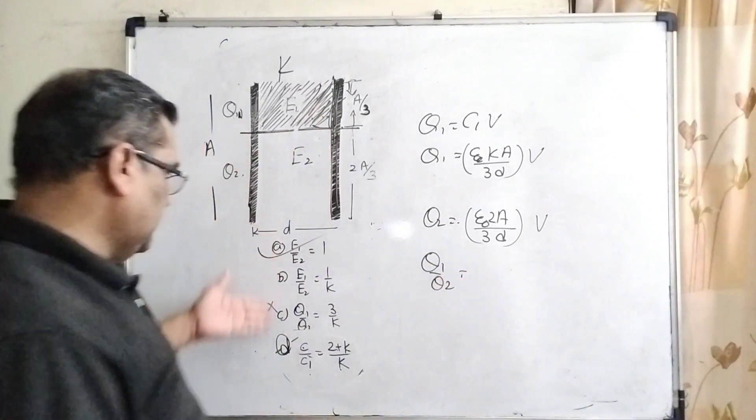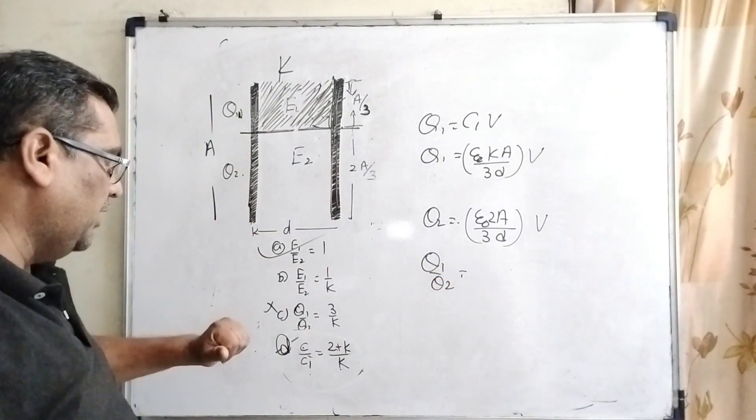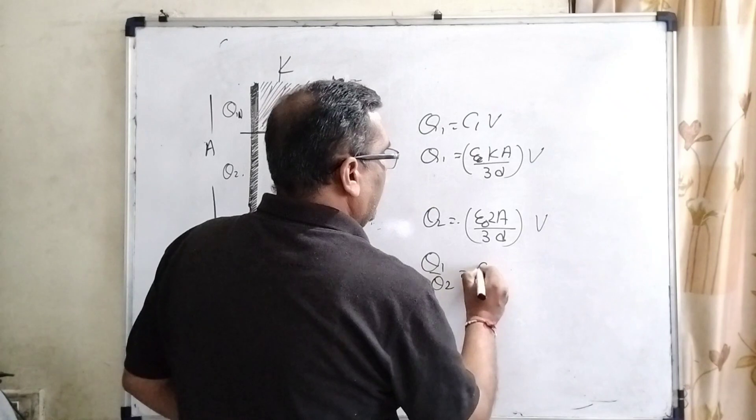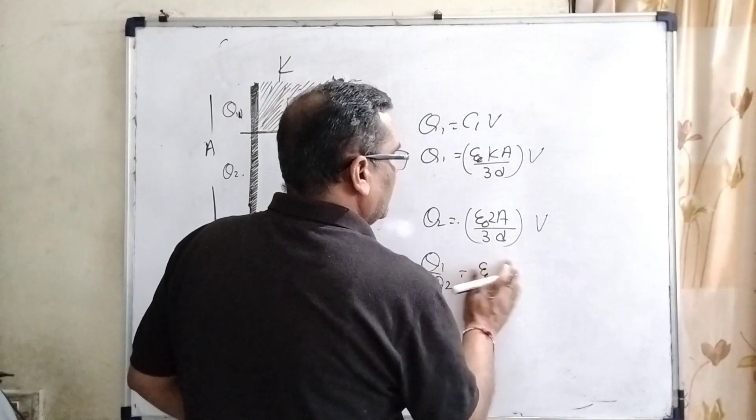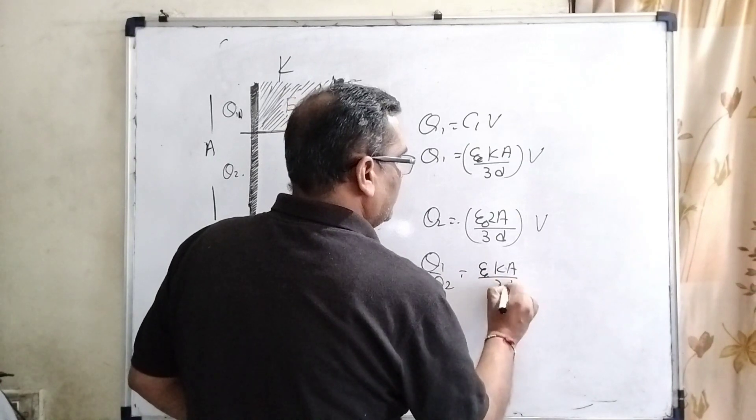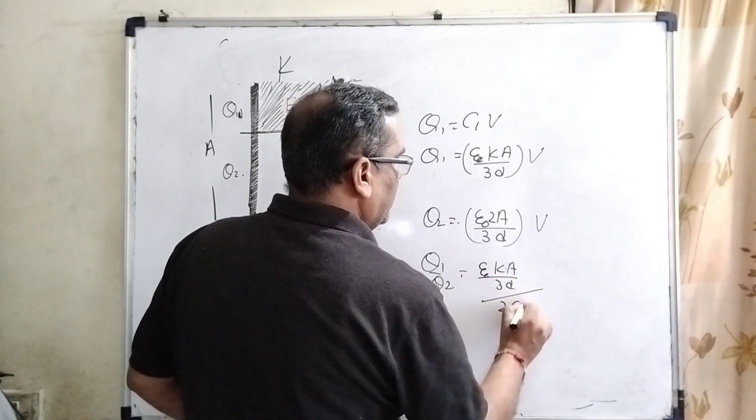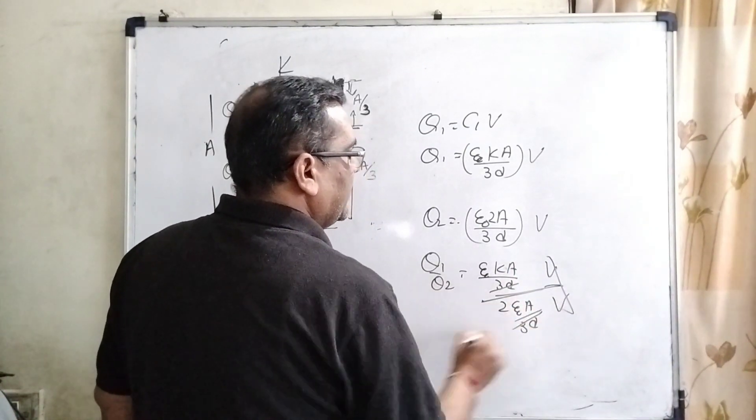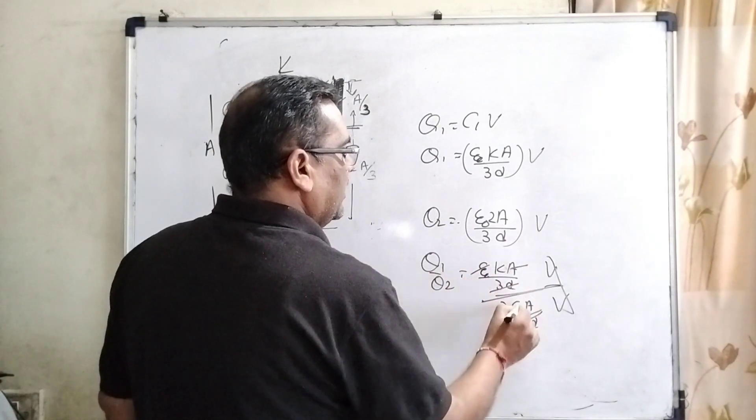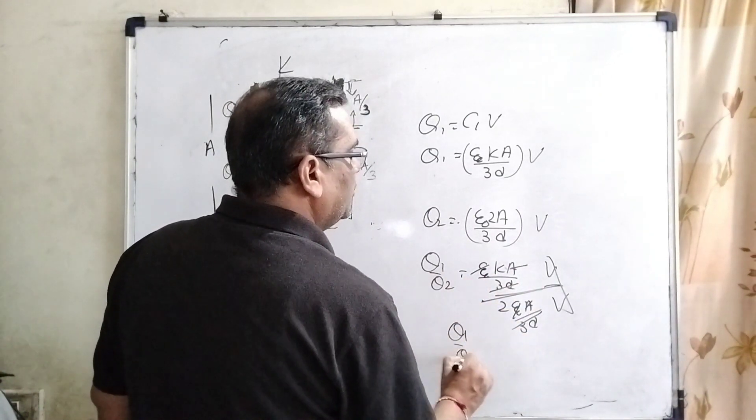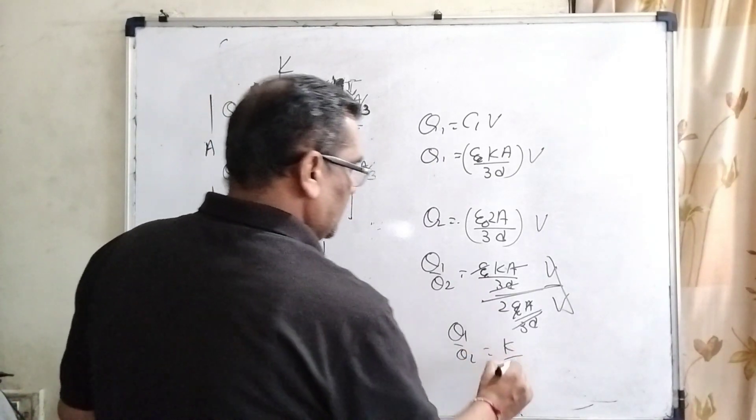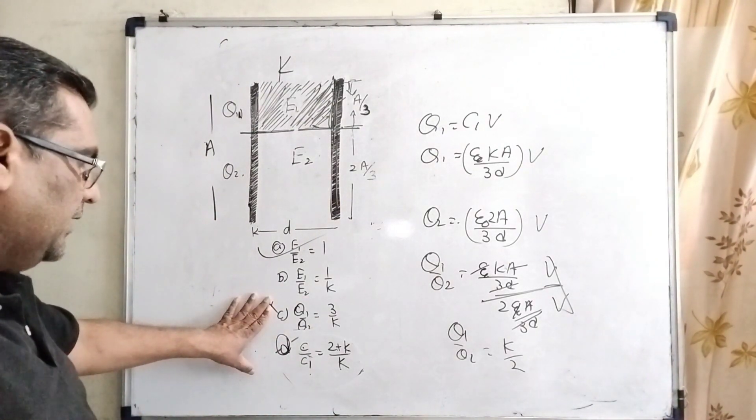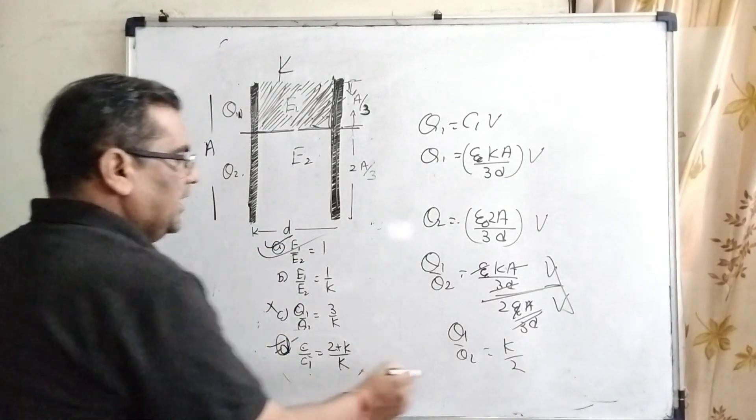So now Q1 upon Q2, because all these ratios Q1 upon Q2, E1 upon E2 we have already found out, C upon C1 we have to find out. So therefore Q1 upon Q2, then epsilon naught K A by 3d times V divided by epsilon naught 2A by 3d times V. Potential V and this V cancel out, 3d and 3d cancel out, epsilon naught A cancels out. Then Q1 upon Q2 is equal to K by 2. And here Q1 upon Q2 is 3 by K. So therefore C option is incorrect. Only A and D are the correct options.